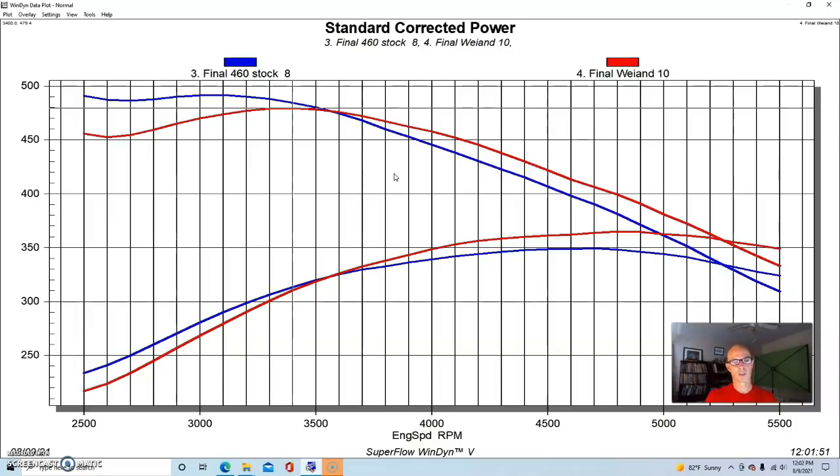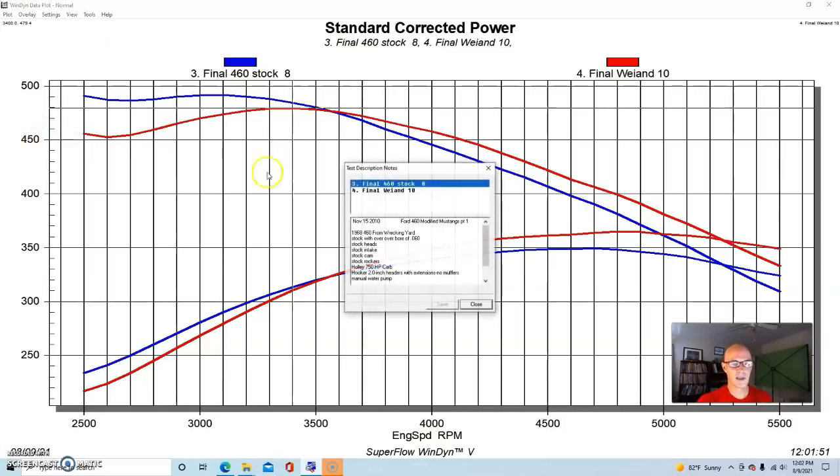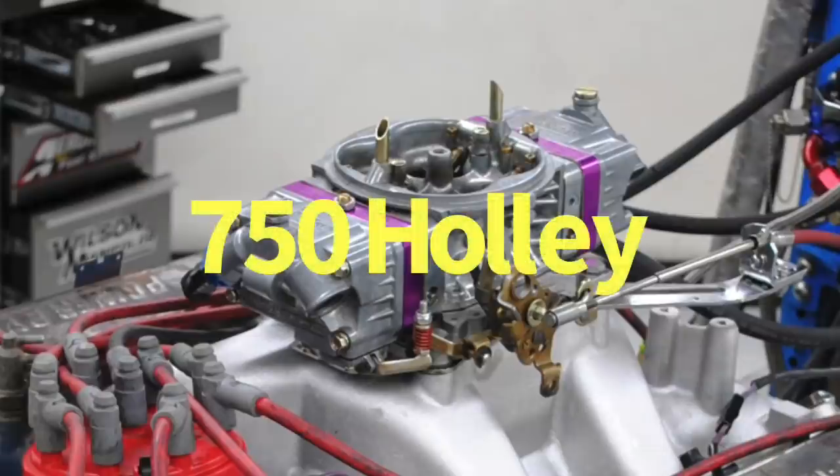Now the one thing I want to note on the 460 is it probably would work better with an RPM Air Gap manifold than the Weiand, so that's also something to think about. So you guys can argue back and forth, this one was run with a 750 Holley.